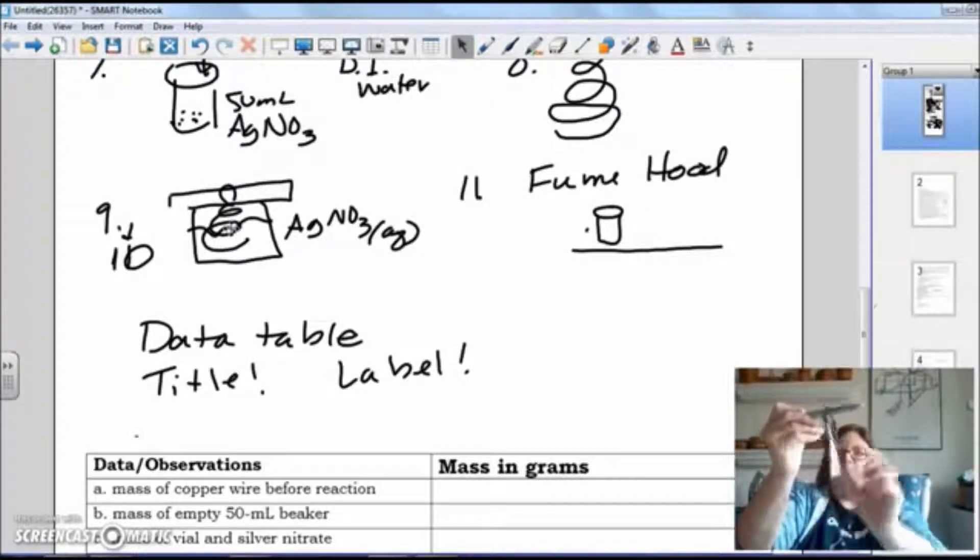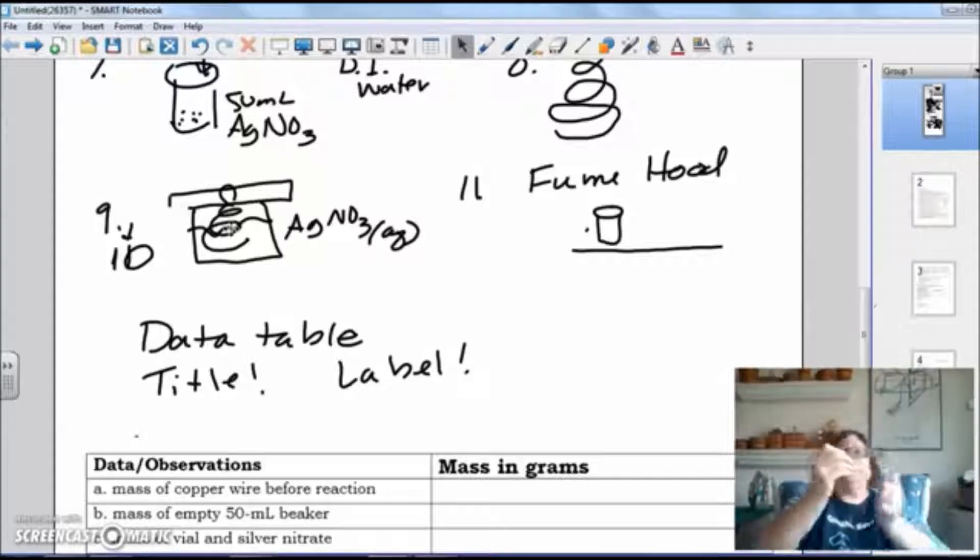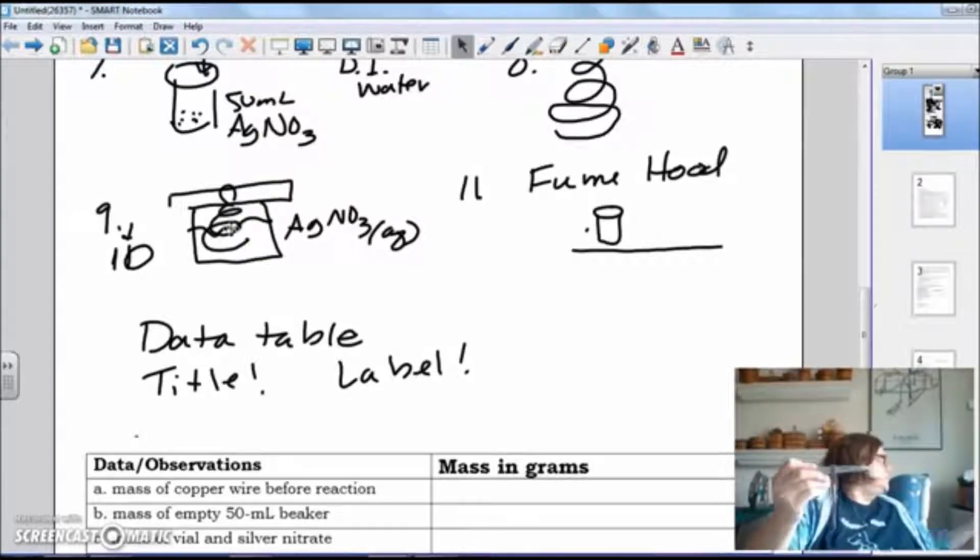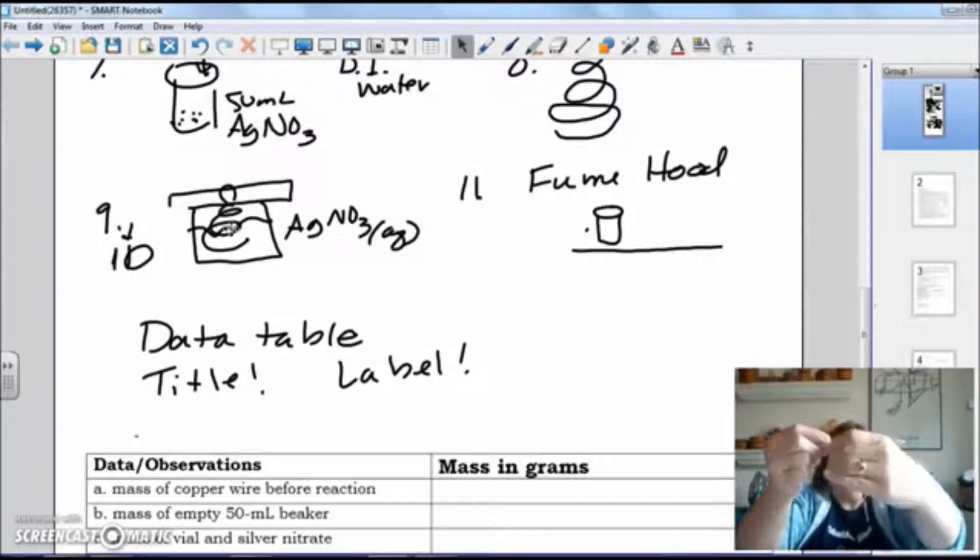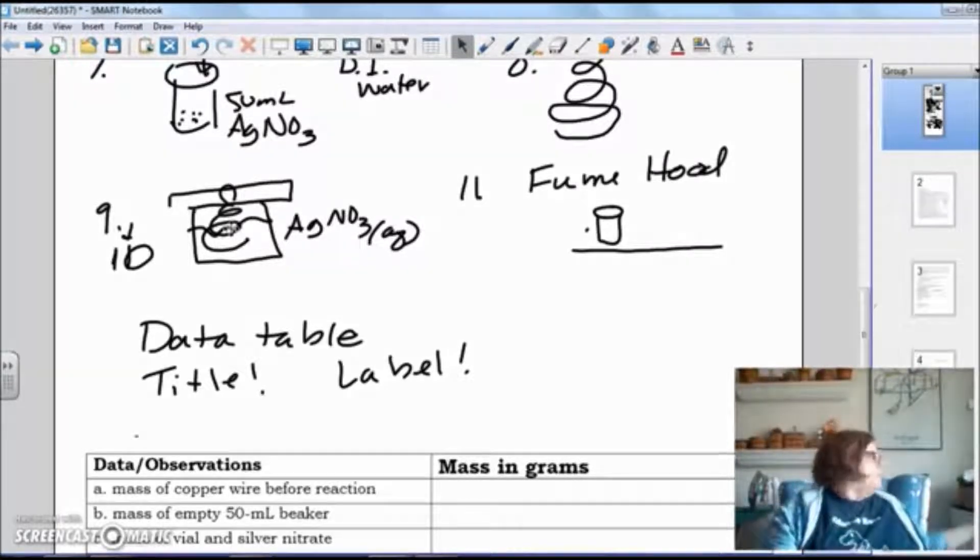But it'll be, of course, coiled around. Then you will take it and you'll set it down into your 50 milliliter beaker. Okay? We good? All right.